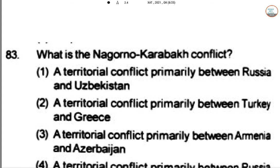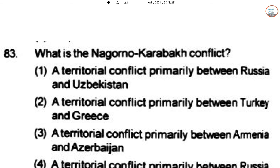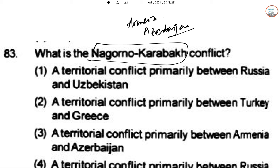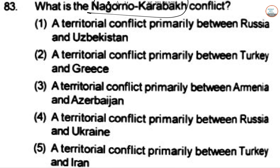What is the Nagorno-Karabakh conflict? This is an ethnic and territorial conflict between Armenia versus Azerbaijan over a disputed region. Ethnic Armenians have been surrounded in the district — it is a very brutal case. So the answer is option C: a territorial conflict between Armenia and Azerbaijan.